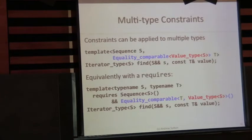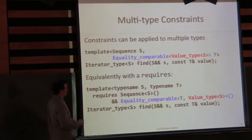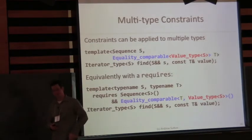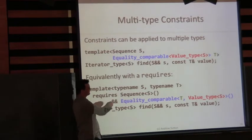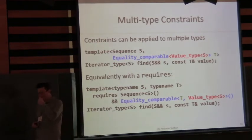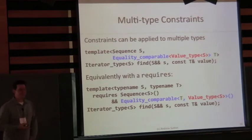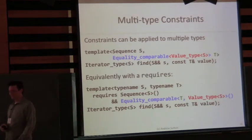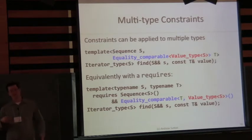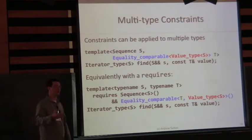The specification does allow for multi-type constraints used as shorthand. For example, if you want to write EqualityComparable as a constraint on a template parameter, you can write it inline — the transformation is straightforward: you just take the declared parameter T and substitute it for the first template argument of the constraint. I actually don't like this syntax — I implemented it with the initial research prototype and wrote all of the standard algorithms using it, and it turns out to make things verbose. But it's supported.